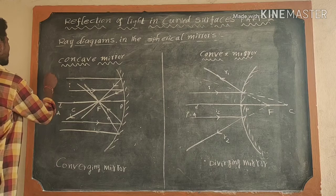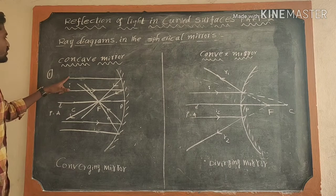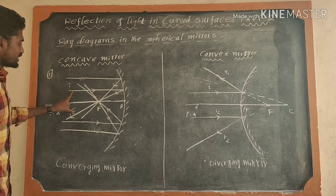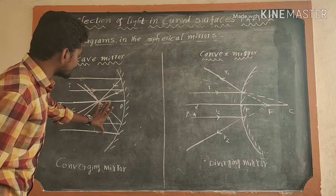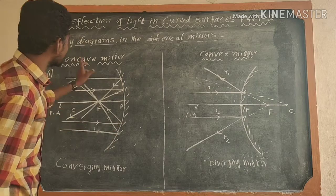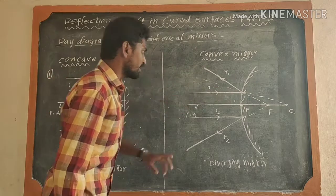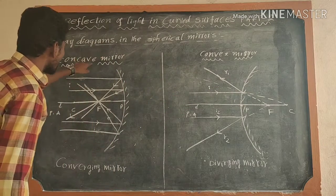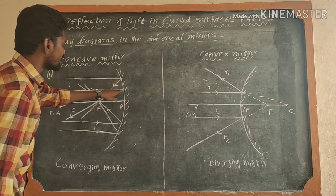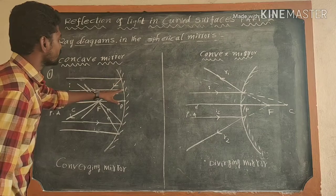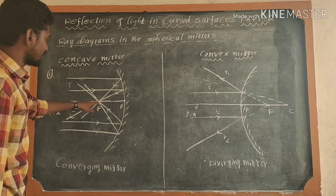In the ray diagram, the first ray diagram: if any incident rays are parallel to the principal axis and strike the reflecting surface in both concave mirror and convex mirror, in the concave mirror, all reflected rays pass through along the focus.